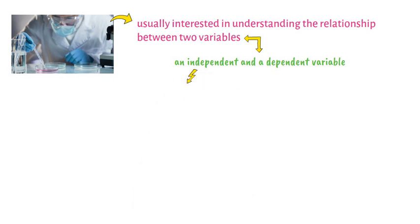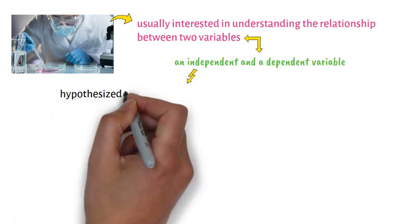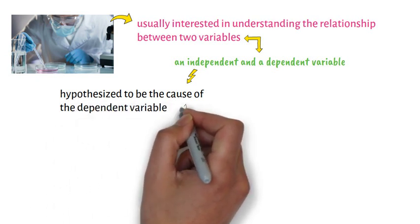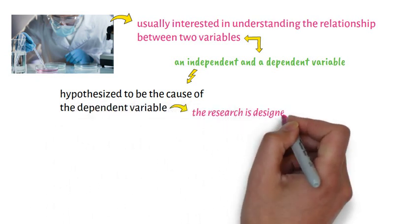The independent variable is usually hypothesized to be the cause of the dependent variable, and the research is designed to prove whether or not this is true.